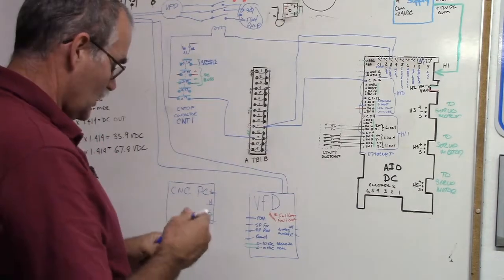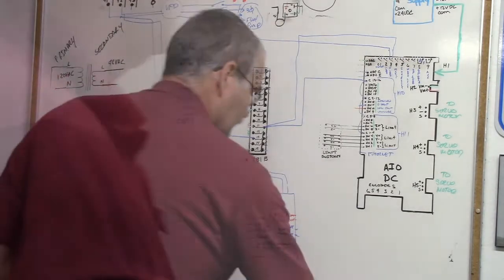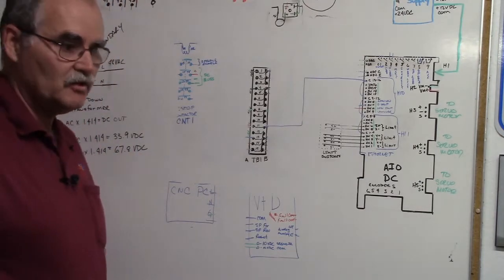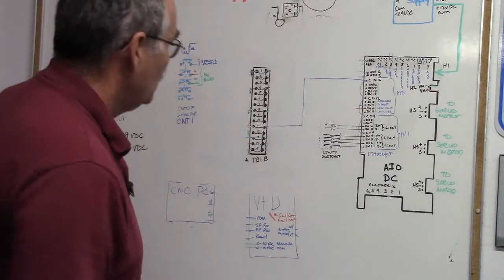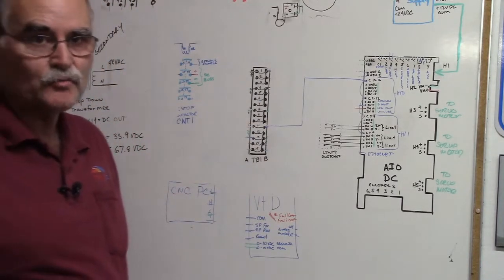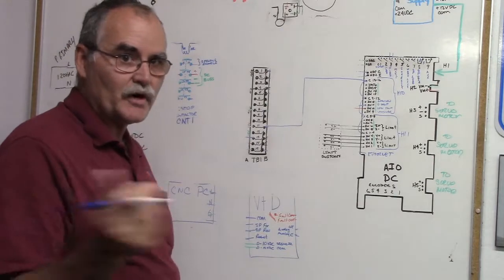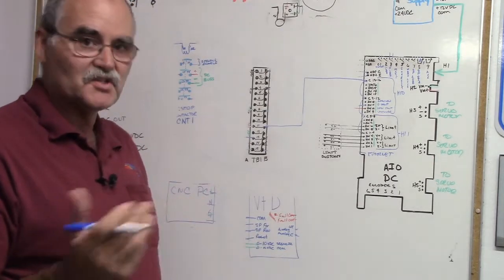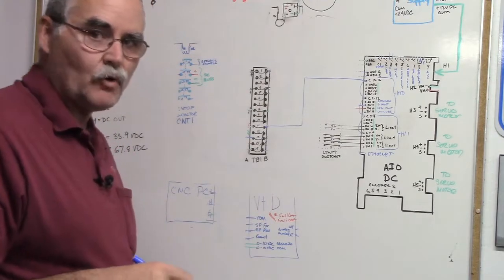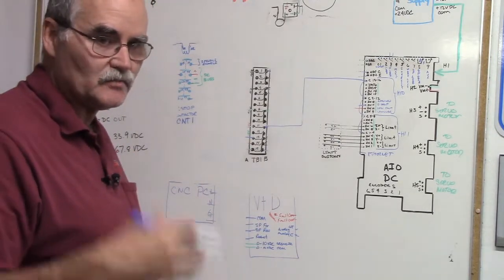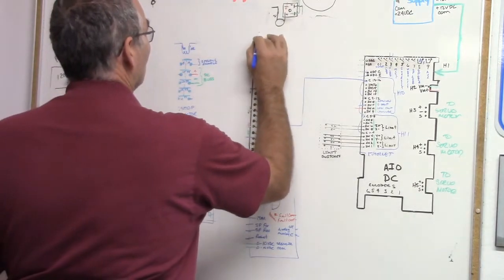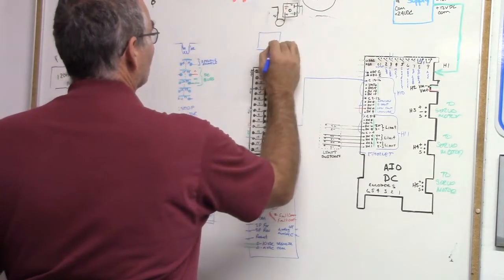Let's say you have a mist system you want to run on your machine. Mist systems are usually pneumatic - they're air-driven. So air goes through the coolant mist system, blows the mist out on your part. You can do MQL - minimum quantity lubrication system. Same thing, they're all based on pneumatics.